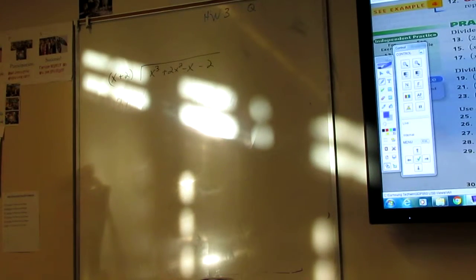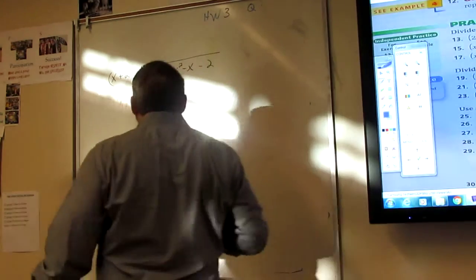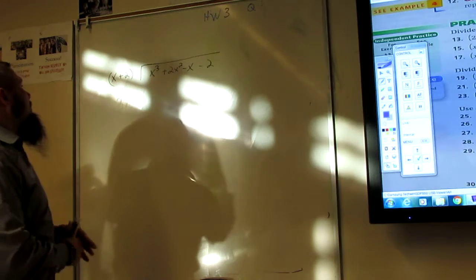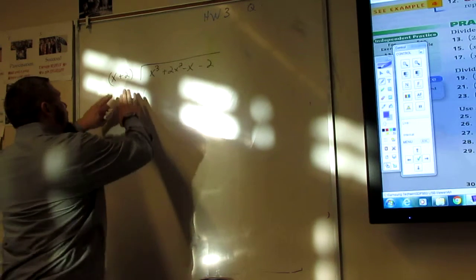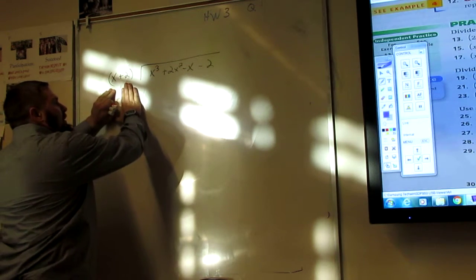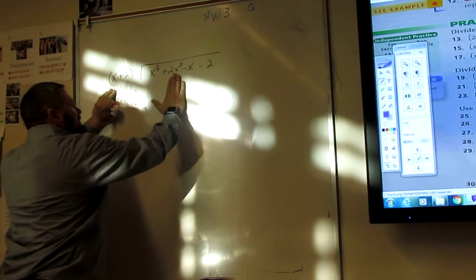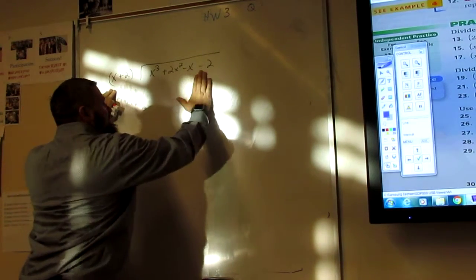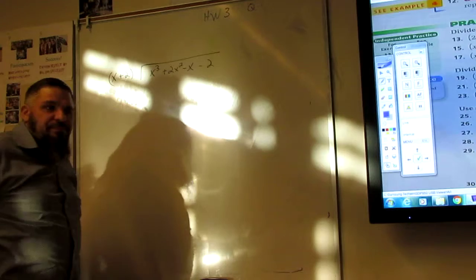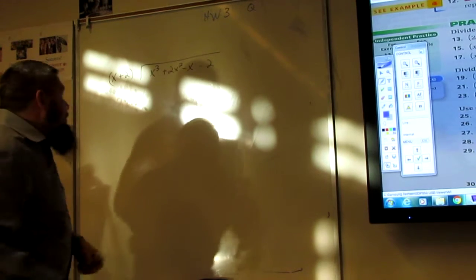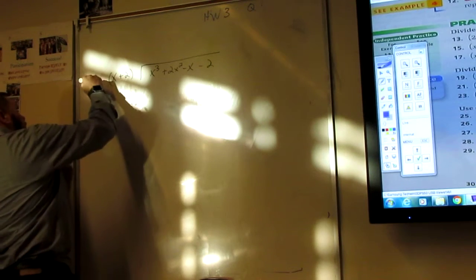All right, so we're dividing x plus 2 into x cubed plus 2x squared minus x minus 2. This is problem number 15.